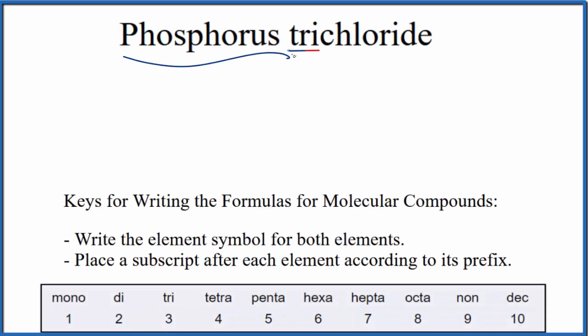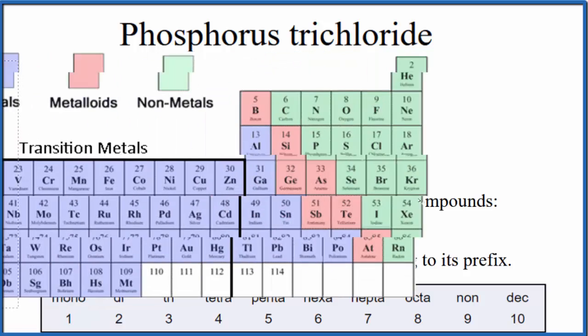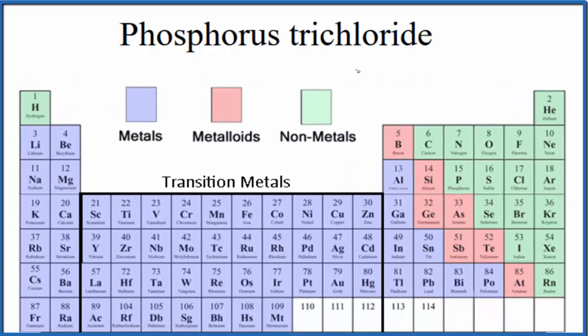To write the formula for phosphorus trichloride, first we need to figure out what type of compound we have. If we look at the periodic table here, broken up into metals, metalloids, and nonmetals...